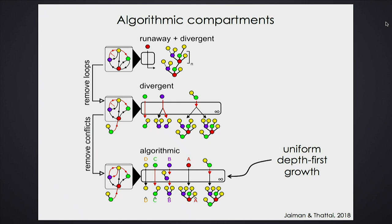This doesn't map every input to a certain unique output — because these two reactions can happen or not happen: if you add a branch to the left side, you can never add one to the right, and vice versa. Now I need to remove all enzyme conflicts. Once I do that, this compartment becomes what we call an algorithmic compartment — literally every possible input, given to it, will eventually reach a single possible output, stochastically but guaranteed at long times.